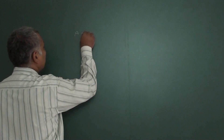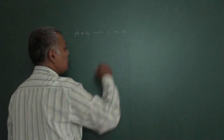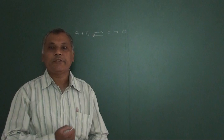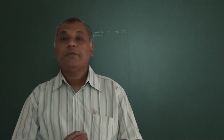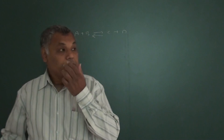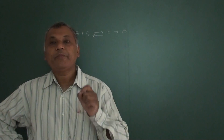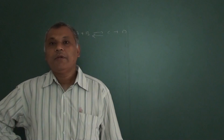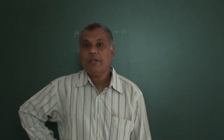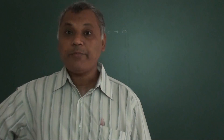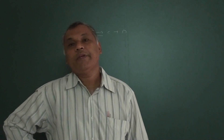Suppose we are having a reaction: A plus B, it converts into C plus D. I want to know at what condition this equilibrium will be established. When we talk about equilibrium, it does not mean that 50% of the reaction is completed. Equilibrium can be established after 5%, 10%, 20%, 50%, 70%, or 90% of the reaction is completed.